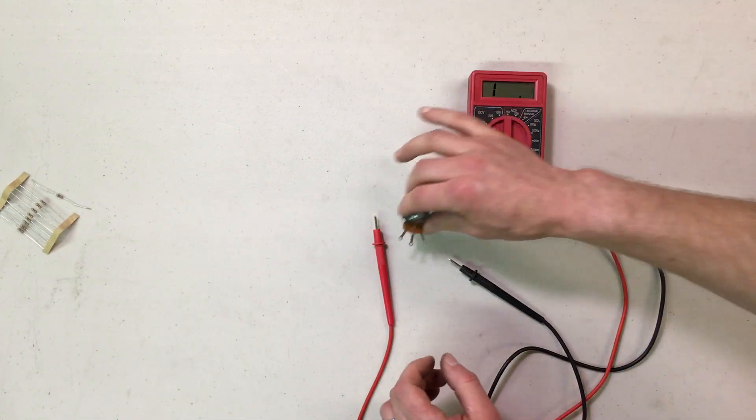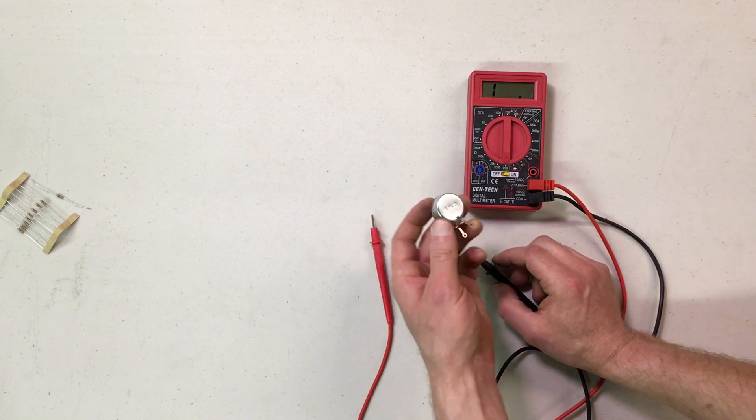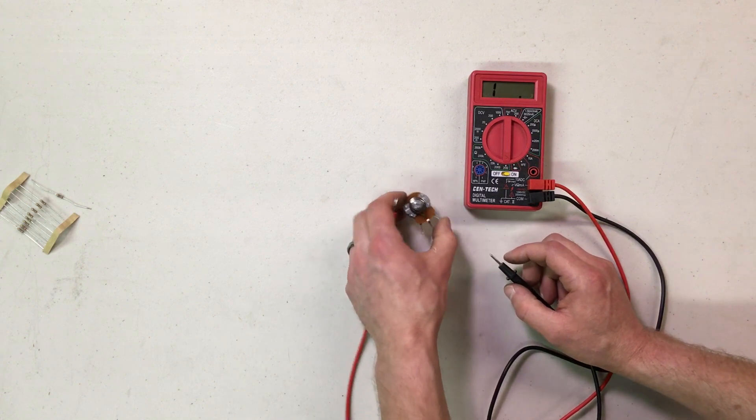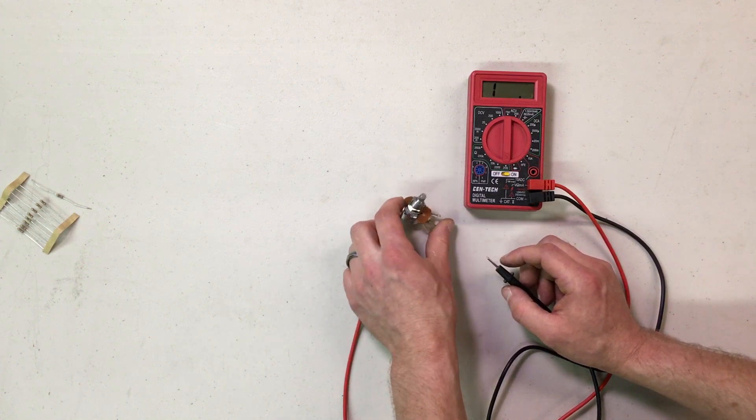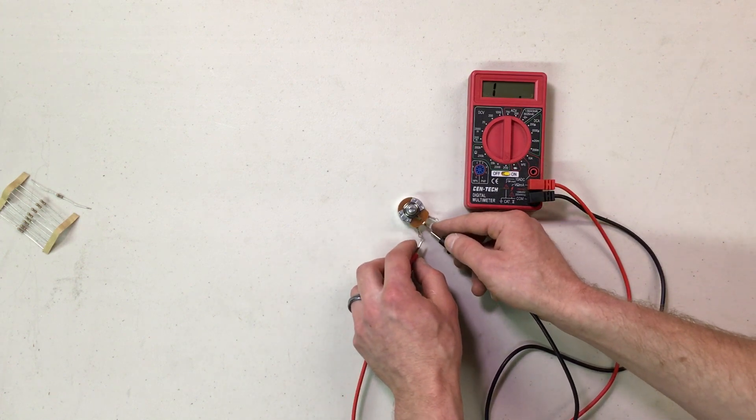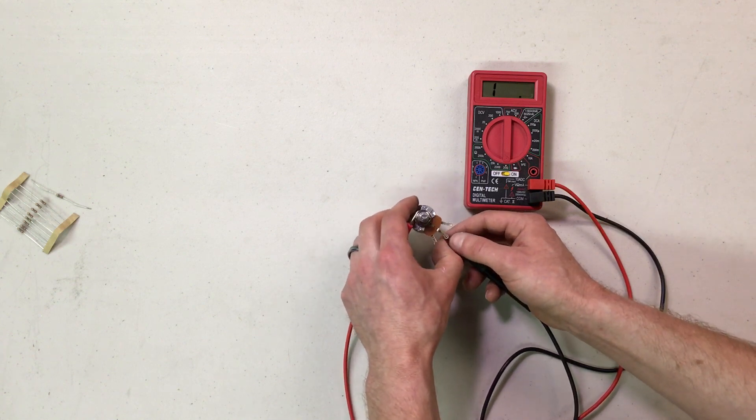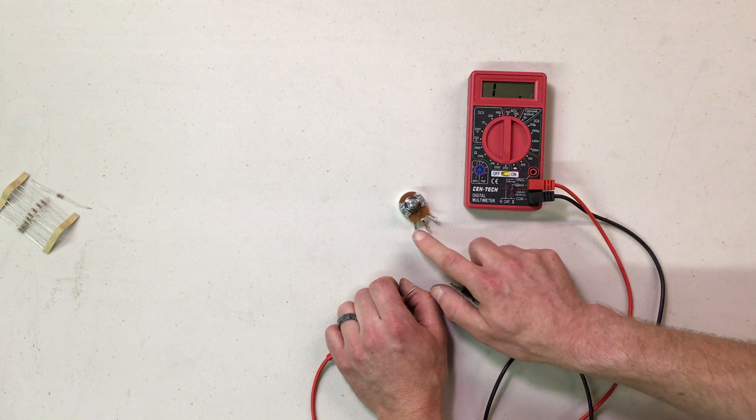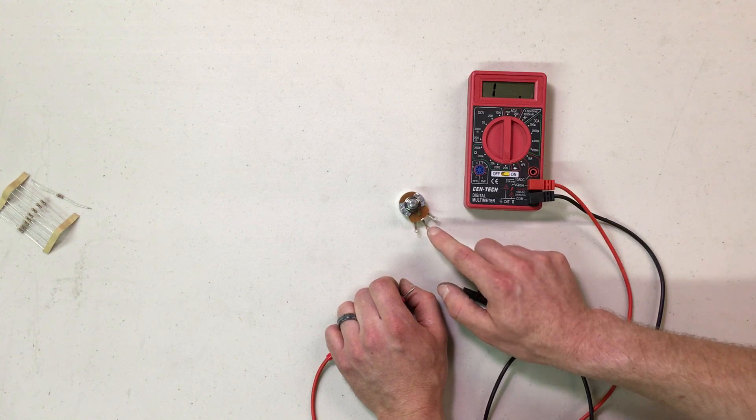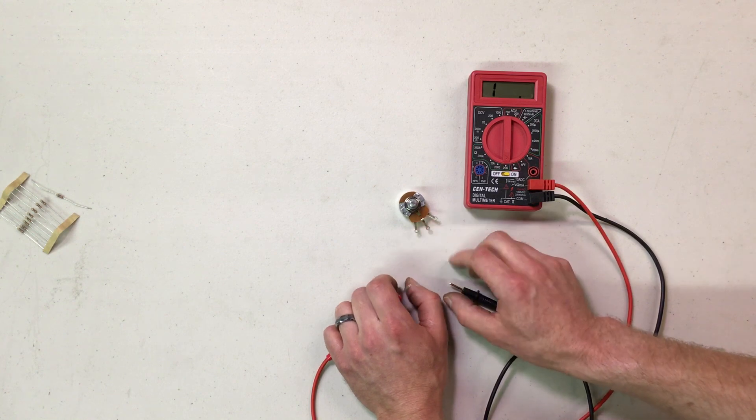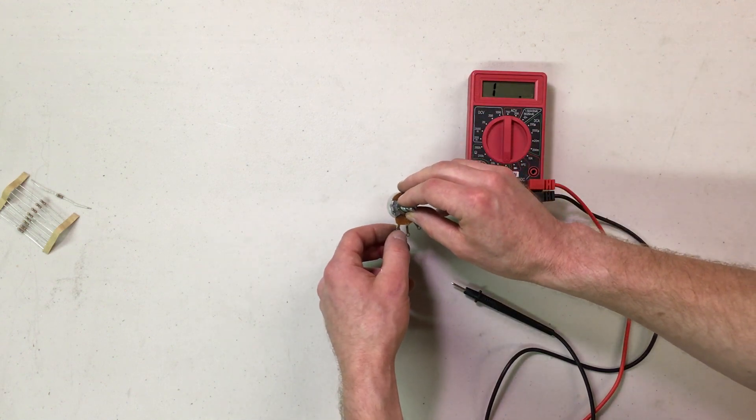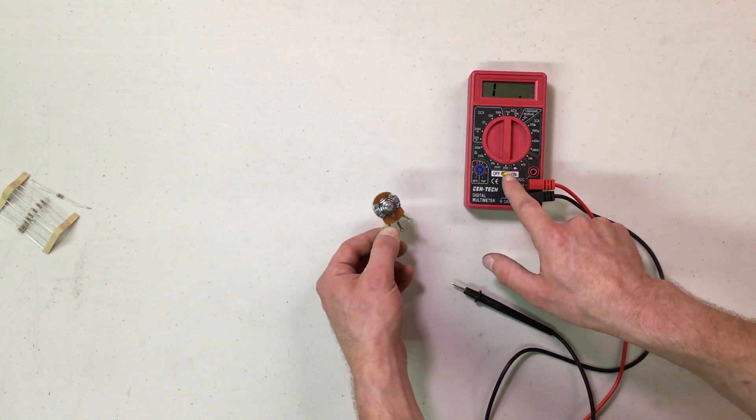I'll use our variable resistor we were using earlier. It says on the back it's a 25 ohm variable resistor, which is a potentiometer. The points connect to the middle and one of the sides, either way, and it depends on which way you want the dial to go. We'll connect it there, still staying on the 200 range because 25 is within 200.